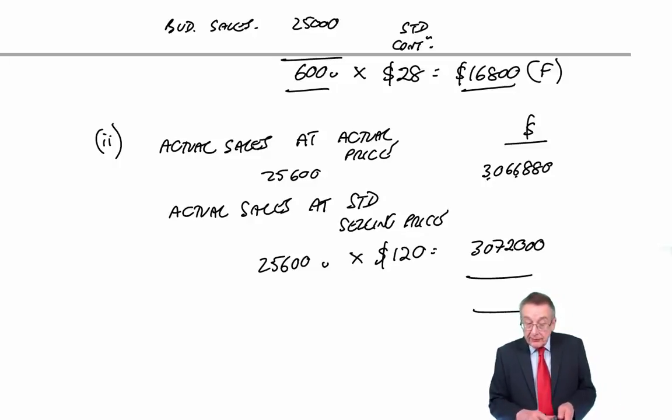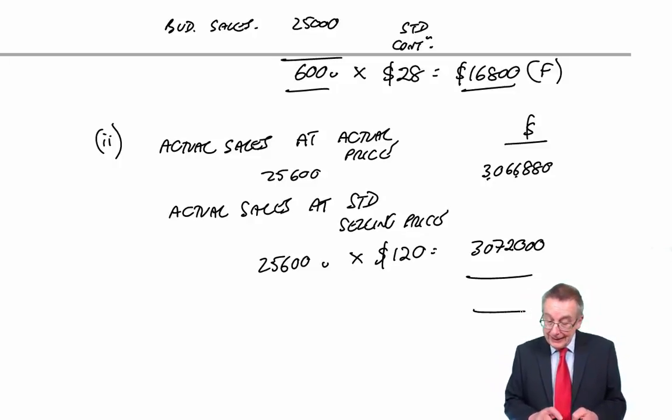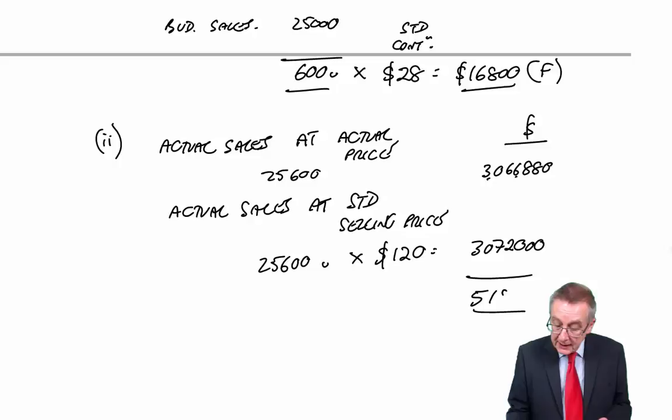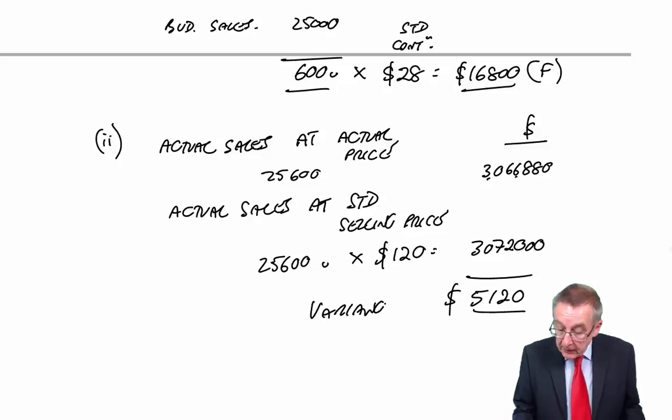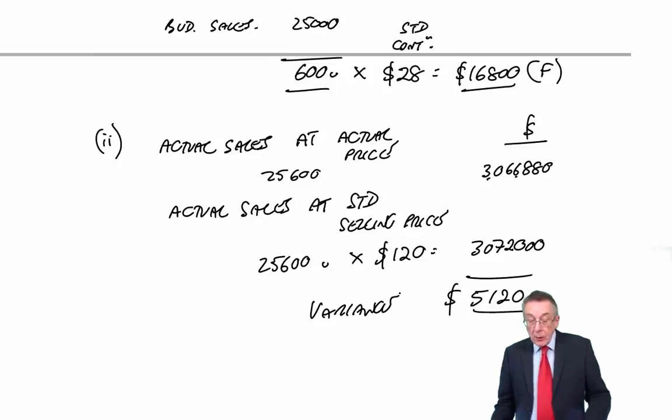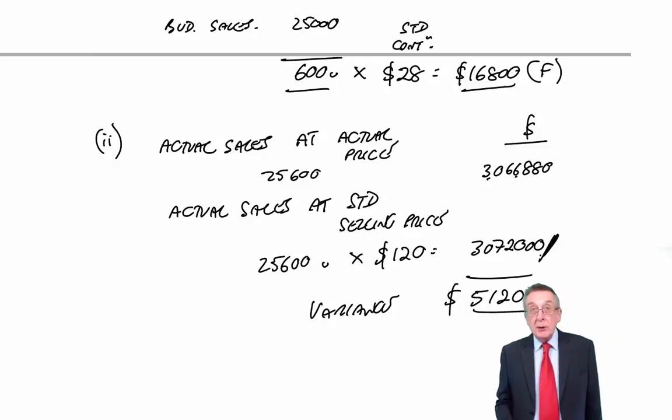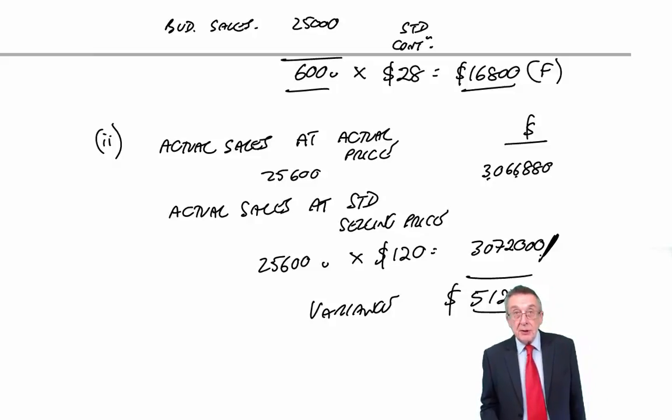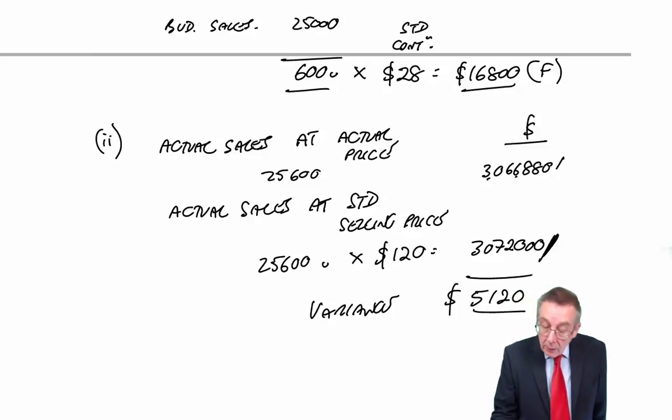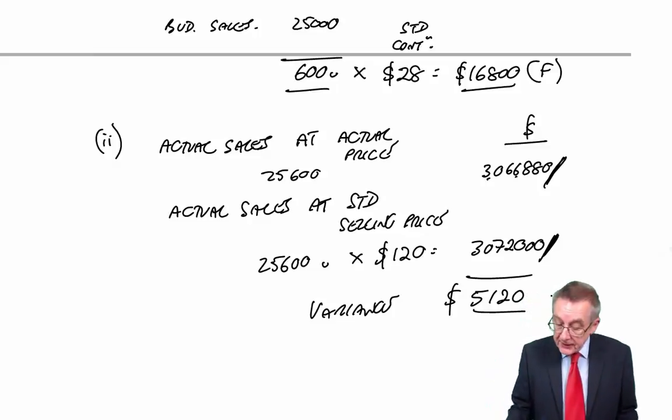And so the difference is our variance. I get the difference to be $5,120. And is it favourable or adverse? Get it the right way around here. We should have got that much revenue, $3,072 million. We actually got less revenue. We must have been selling at a lower price. The variance is adverse.